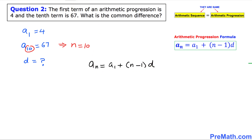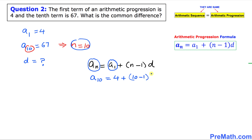In our case, a sub 10 equals a sub 1, which is 4, plus n, which is 10, minus 1 times d. We know a sub 10 equals 67, so this becomes 67 equal to 4 plus 9d.